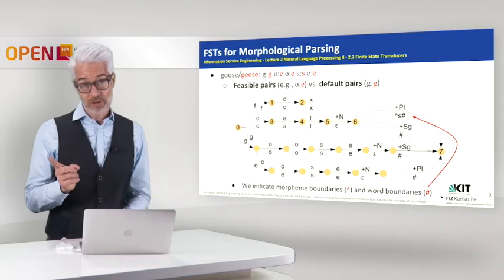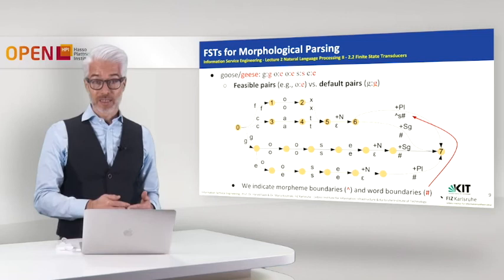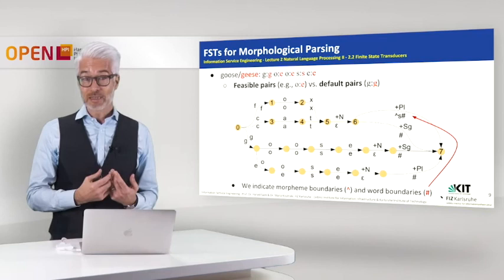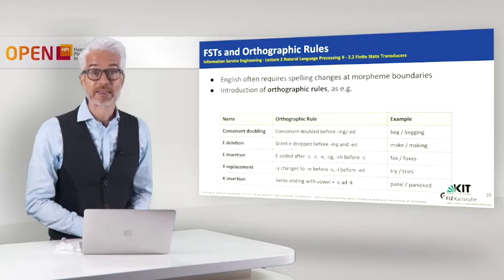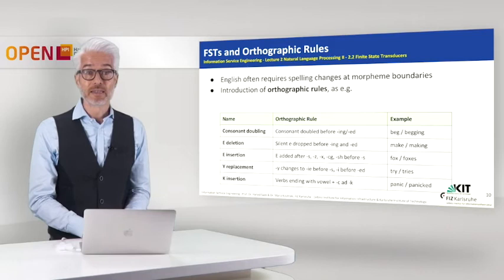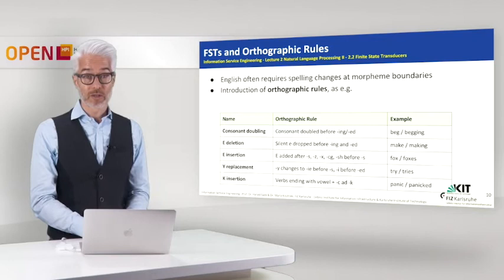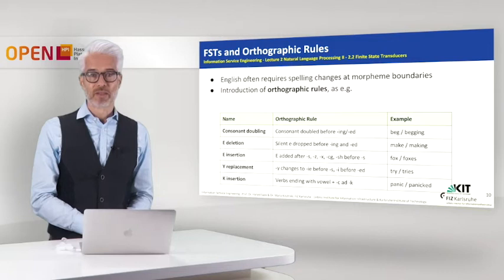This is an orthographic rule we will take into account separately — so this is not the full story. This is only to show how the relation of lexical tape and surface tape really works. What we need to make it really work is an intermediate representation — a third kind of tape. Sometimes English requires spelling changes exactly at morpheme boundaries, as we have already seen for the plural S, but also in other cases.